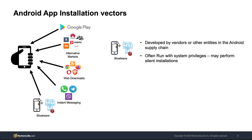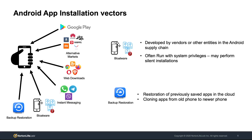Bloatware apps are typically developed by phone vendors or other entities in the Android supply chain and offer unclear functionality to the end user. Interestingly, these applications often run with system privileges and may perform even silent installations. Another possible distribution vector is backup restoration, in which users restore previously saved apps in the cloud, typically when users clone apps from an old to a newer phone.